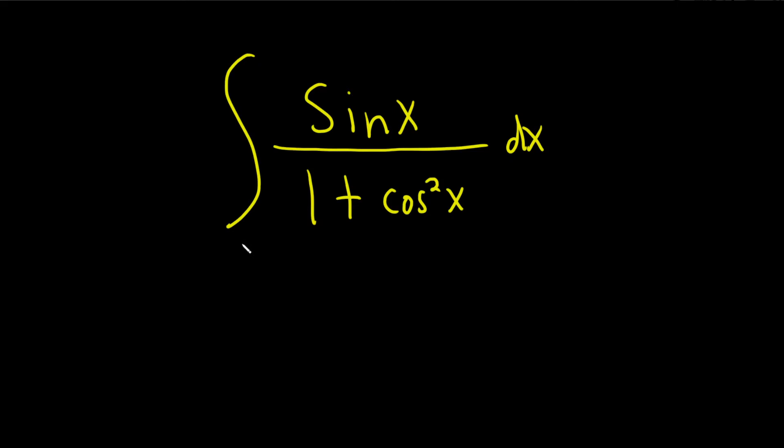Integrate sine x over 1 plus cosine squared of x. So if we let u be the entire bottom piece, if we think about it, what's going to happen, we're going to have to use the chain rule.